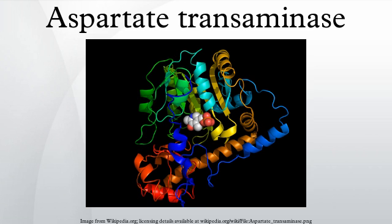Aspartate transaminase, as with all transaminases, operates via dual substrate recognition — that is, it is able to recognize and selectively bind two amino acids with different side chains. The transaminase reaction consists of two similar half-reactions that constitute what is referred to as a ping-pong mechanism. In the first half-reaction, amino acid-1 reacts with the enzyme-PLP complex to generate keto acid-1 and the modified enzyme-PMP. In the second half-reaction, keto acid-2 reacts with enzyme-PMP to produce amino acid-2, regenerating the original enzyme-PLP in the process.